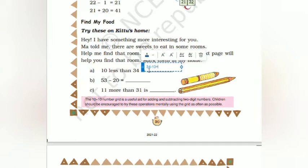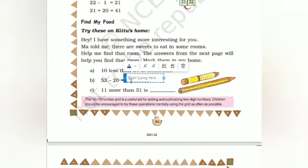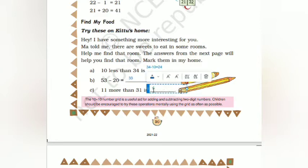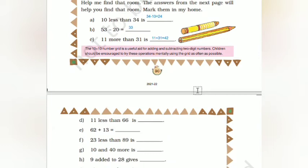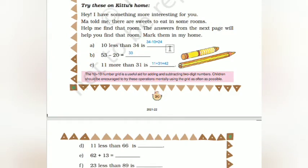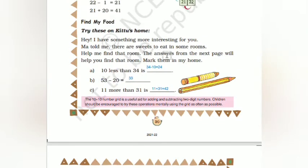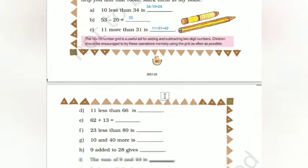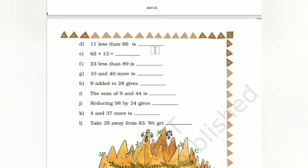53 minus 20 gives 33. That is 3 minus 0 is 3, 5 minus 2 is 3. Then 11 more than 31 means plus: 31 plus 11 gives 42. Like this we have to solve the sums. After that we have to color these values in the ladder. The numbers given are 24, 33, and 42. Then next: 11 less than 66. How to do this: 66 subtract 11 from 66.